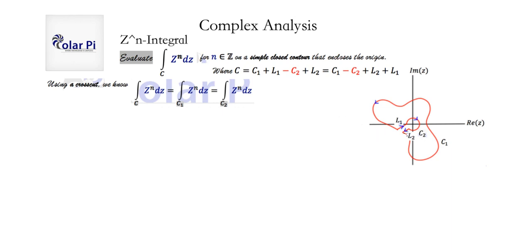As the radius of this small circle centered at the origin, C2, goes to zero — as the radius r goes to zero — the cross cut gap goes to zero. And so C1 becomes a simple closed contour that encloses the origin. We saw in the last video that the closed integral over C is the same as the integral over C1, the simple closed contour enclosing the origin, which in turn is the same as the integral over C2, this small circle centered at the origin that encloses the singular point.